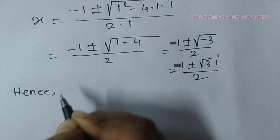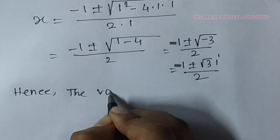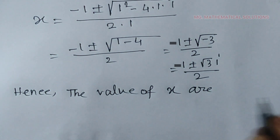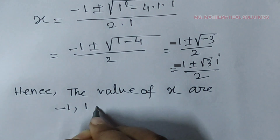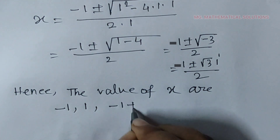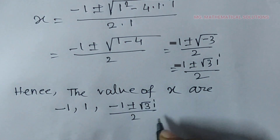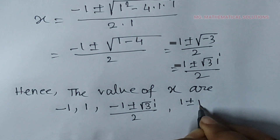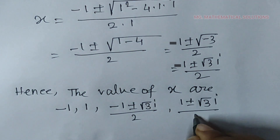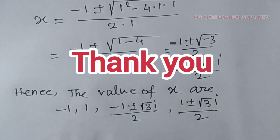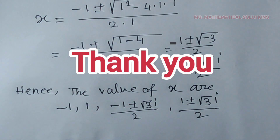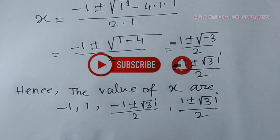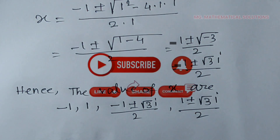Hence, all values of x are: 1, -1, (1 ± √3·i)/2, and (-1 ± √3·i)/2. Thanks for watching my video. If you like this video, please subscribe to this channel and click the bell icon. Like, share, and comment.